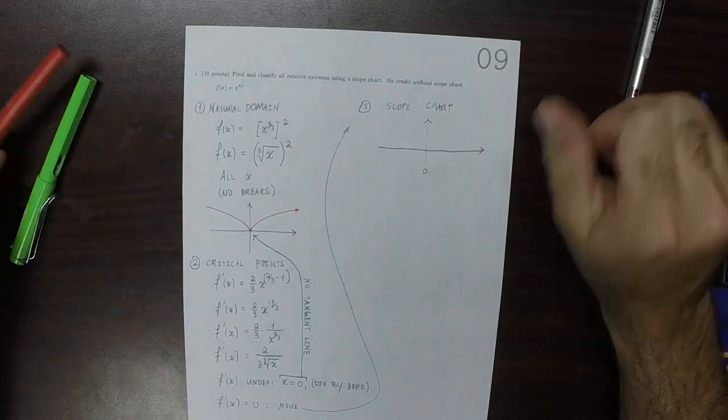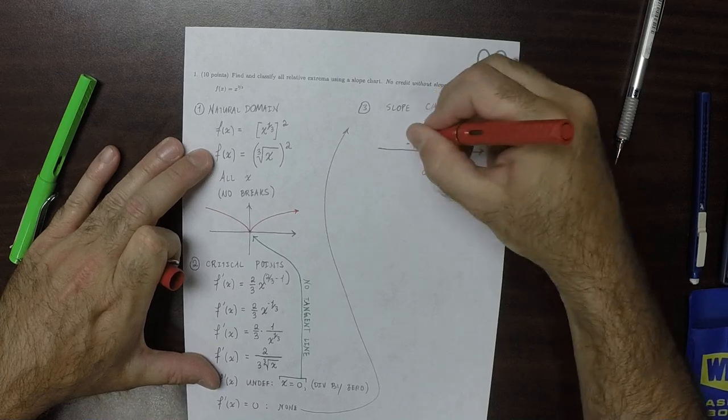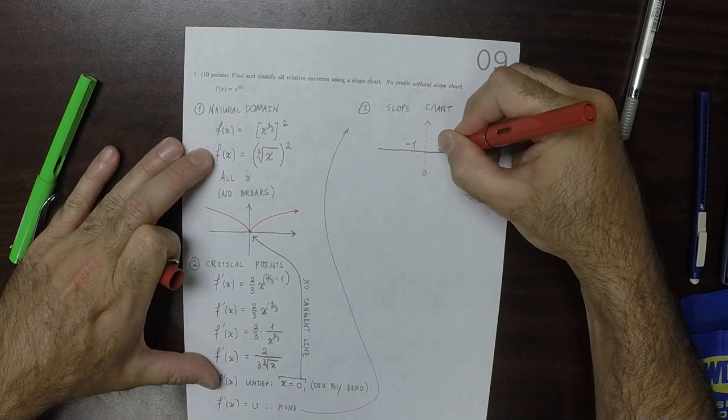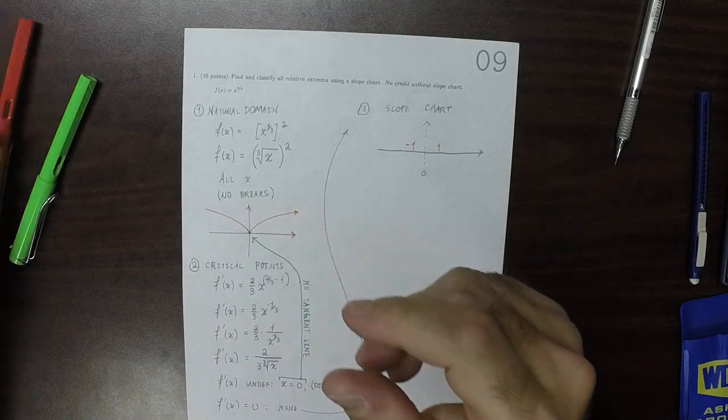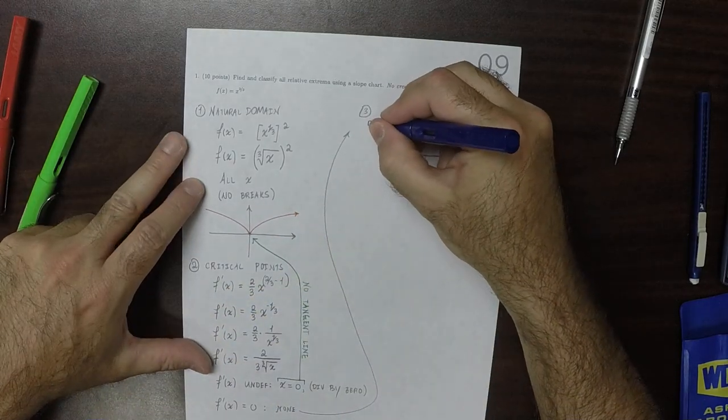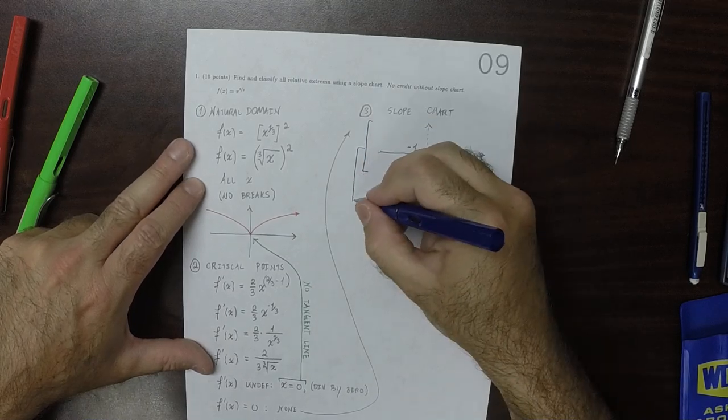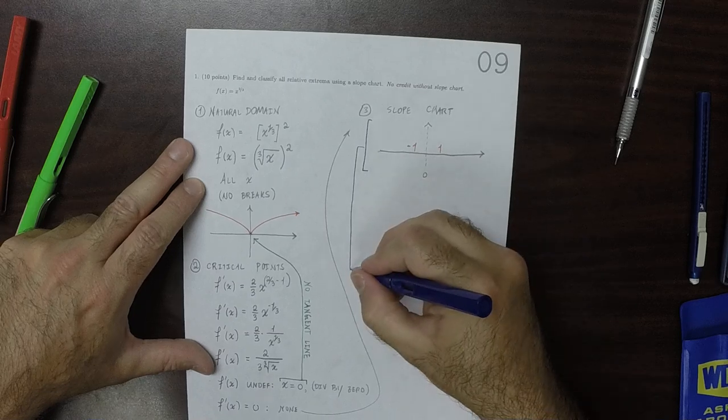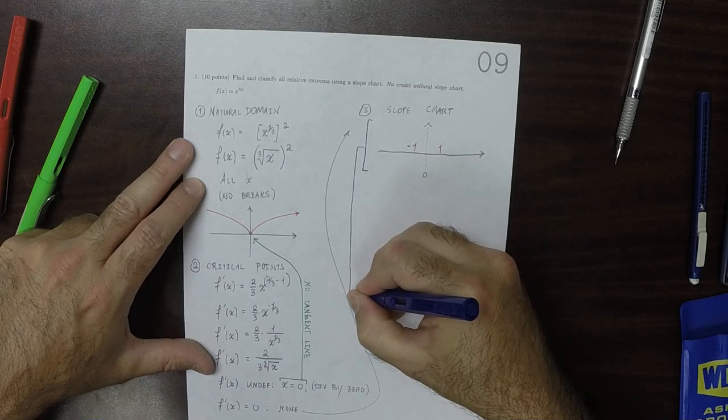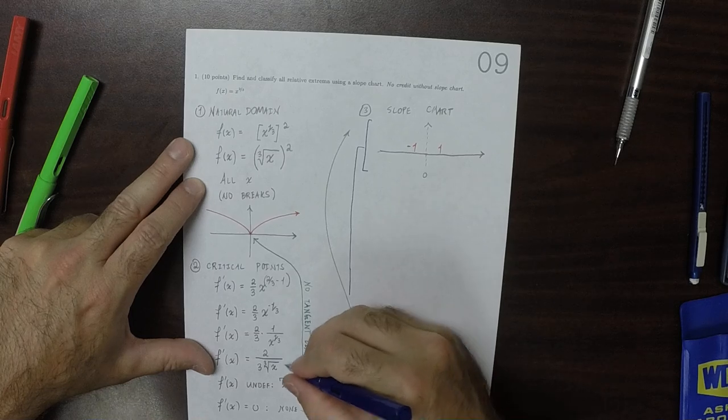So let's plug in, say, negative one in the left region and positive one in the right region. And we're going to plug those into this simplified version of the derivative, right here.